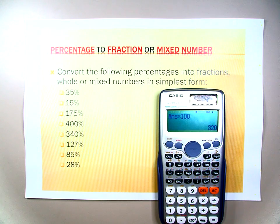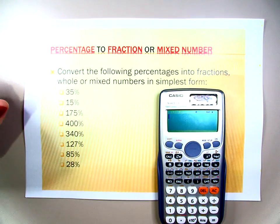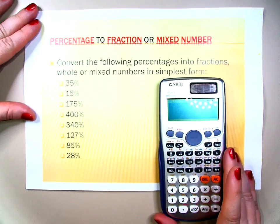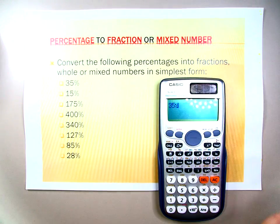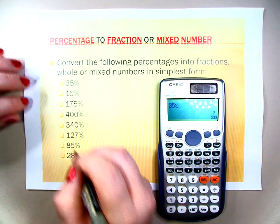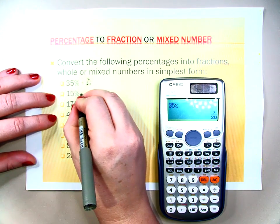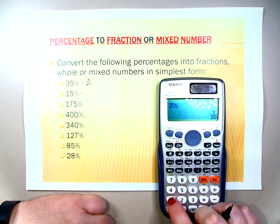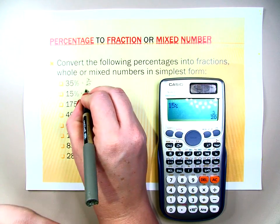The next thing we're going to look at is converting percentages into fractions, whole numbers, or mixed numbers in simplest form. We're going to be mainly using the percent sign on the calculator. For 35%, enter 35, then Shift and open parentheses for the percent — it immediately gives you 7 over 20. For 15%, we did this one earlier: enter 15, Shift, percent — and that gives you 3 over 20.